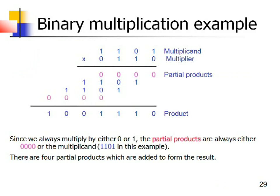Take an example with a multiplicand and multiplier. These are the partial products obtained. If a 0 in the multiplier is multiplied with the multiplicand, the partial product is all zeros. If a 1 in the multiplier is multiplied with the multiplicand, the partial product equals the multiplicand itself. We get 4 partial products total, and we add those partial products to get the final result. Since binary numbers contain only 0 and 1, partial products are always either 0 or the multiplicand.